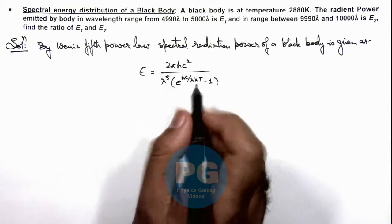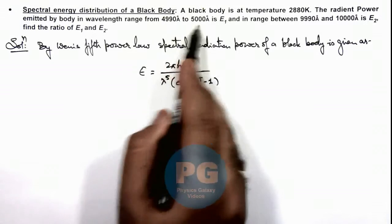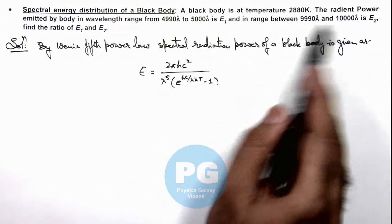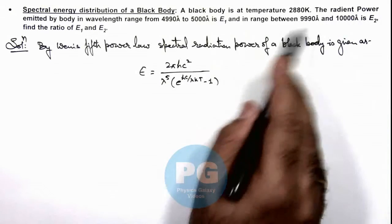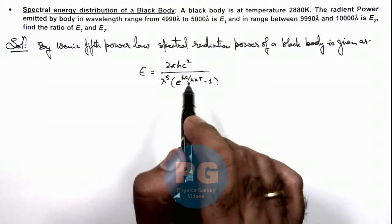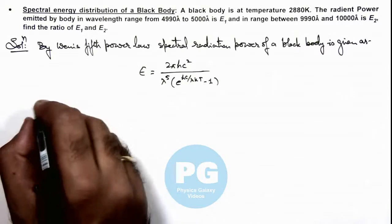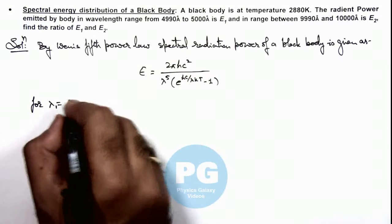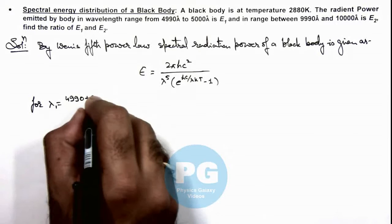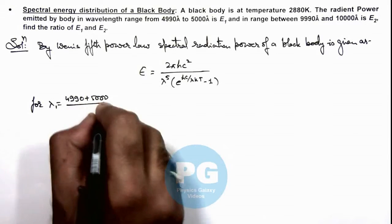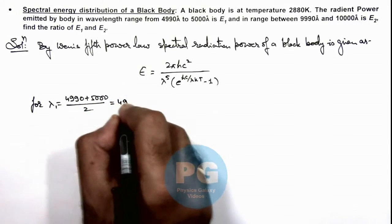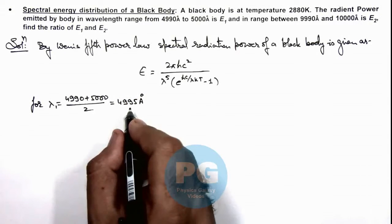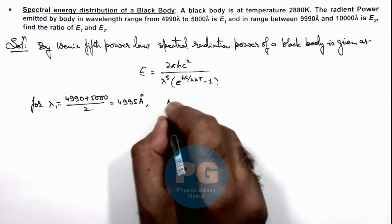So we can write for the two short neighborhoods of wavelengths between 4990 to 5000 and between 9990 to 10,000, the spectral radiation power is E1 and E2. Then we can write for λ1 equals 4990 plus 5000 divided by 2, which is 4995 angstrom, which is the average wavelength corresponding to which we calculate the spectral energy.